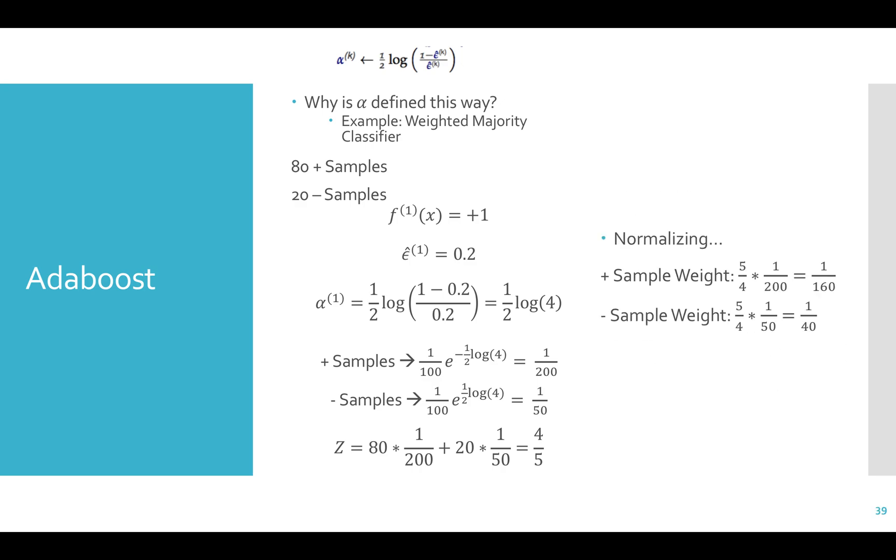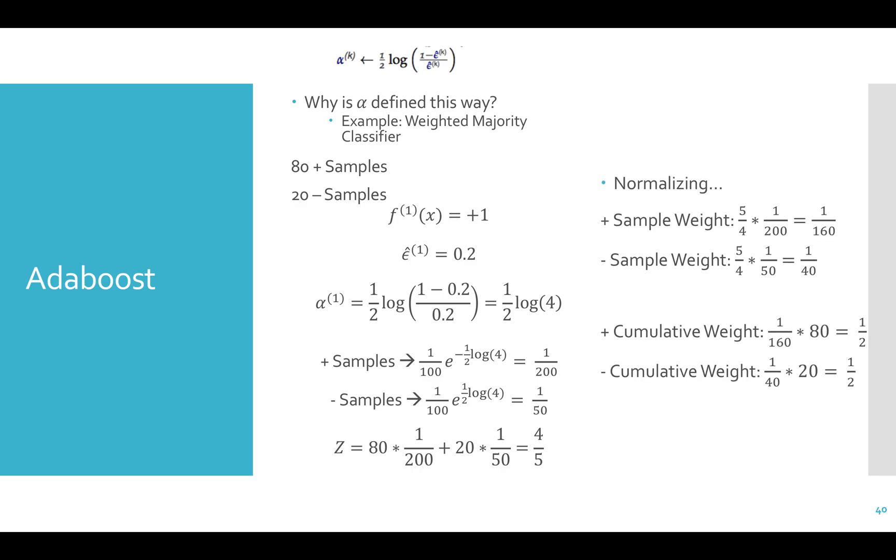However, since there are 80 positive examples and 20 negative examples, the cumulative weight on all positive samples is 1 half. And the cumulative weight on all negative samples is also 1 half. Thus, after a single boosting iteration, the data has become precisely evenly weighted. This guarantees that in the next iteration, our weak learner must do something more interesting than majority voting if it is to achieve an error rate less than 50% as required.